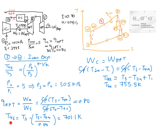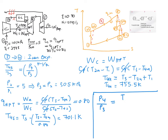Now that we have T4S equal to 701.1 Kelvin and P3 equal to 505 kilopascals, we plug these into the isentropic relation. P4 over P3 equals (T4S over T3) raised to the power K over (K minus 1), and finally P4 is equal to 160.4 kilopascals.